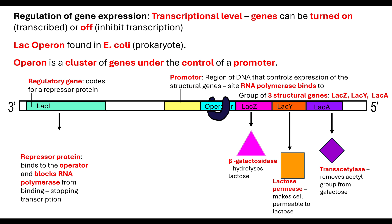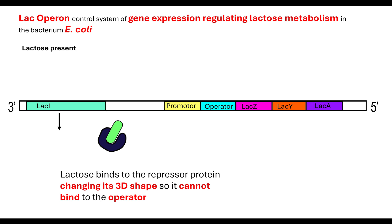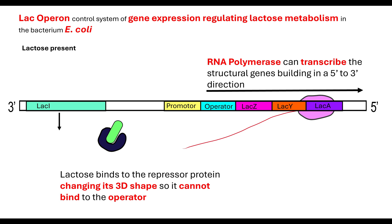If glucose levels drop low enough, the E. coli still needs to be able to do respiration and therefore needs to hydrolyse the lactose. When lactose is present, it binds to the repressor protein, changing its 3D shape — its tertiary structure — so it cannot bind to the operator. If the repressor protein cannot bind, RNA polymerase is now able to bind at the promoter region, move along and transcribe the structural genes, building in the 5 to 3 direction and forming phosphodiester bonds, producing pre-mRNA which can then be translated into those three proteins.